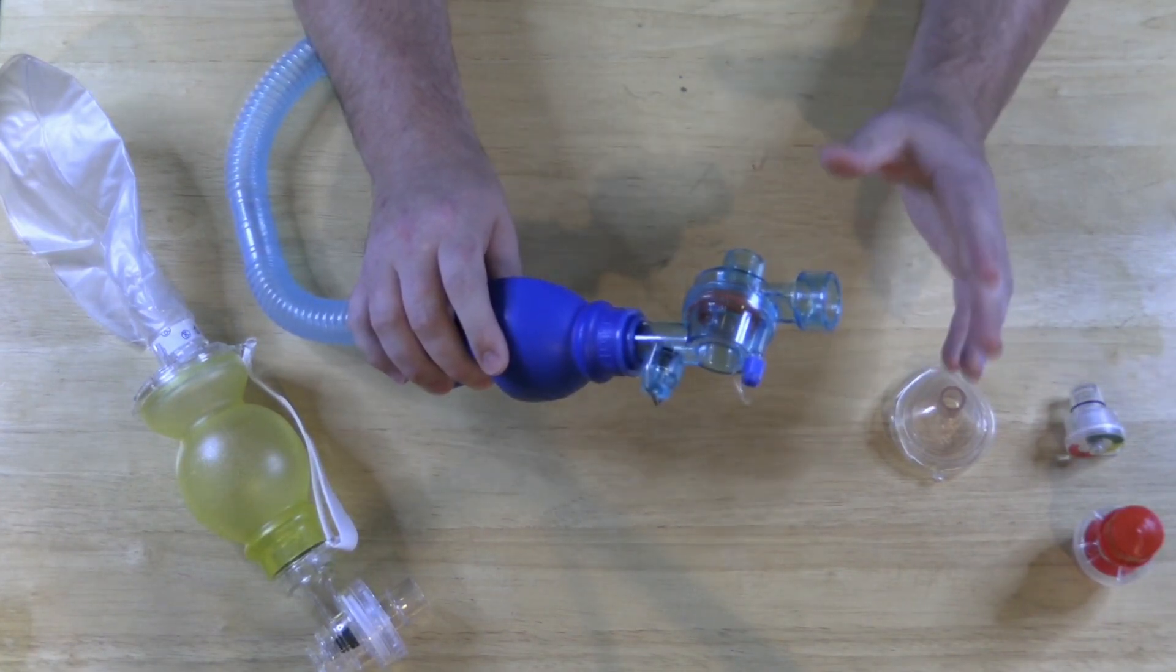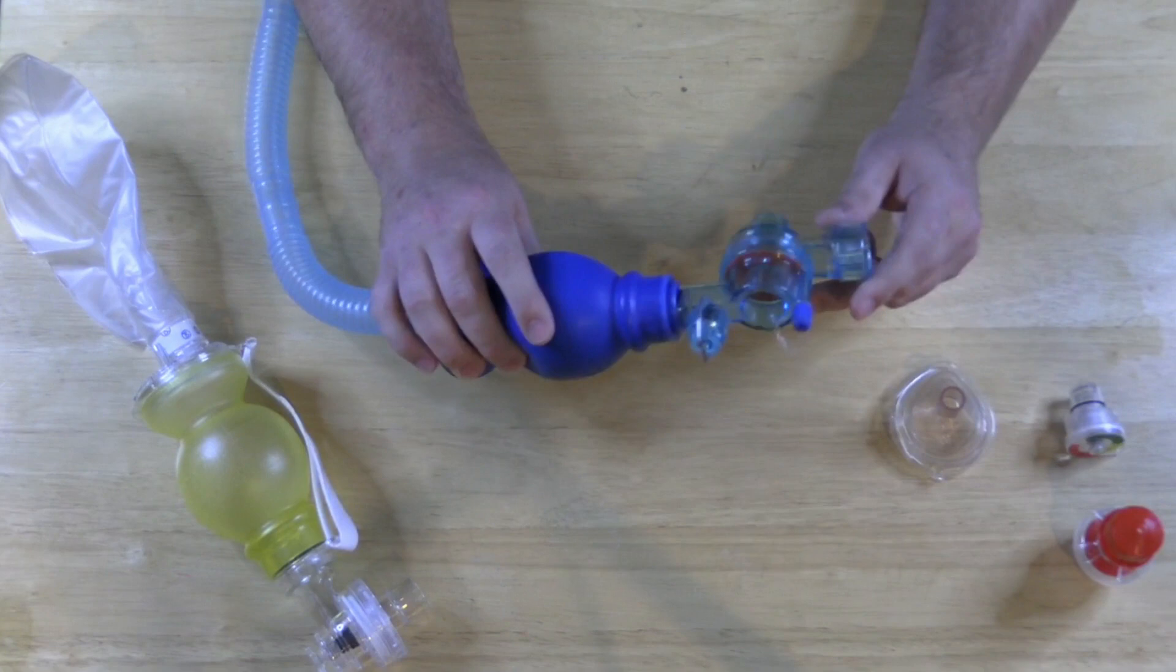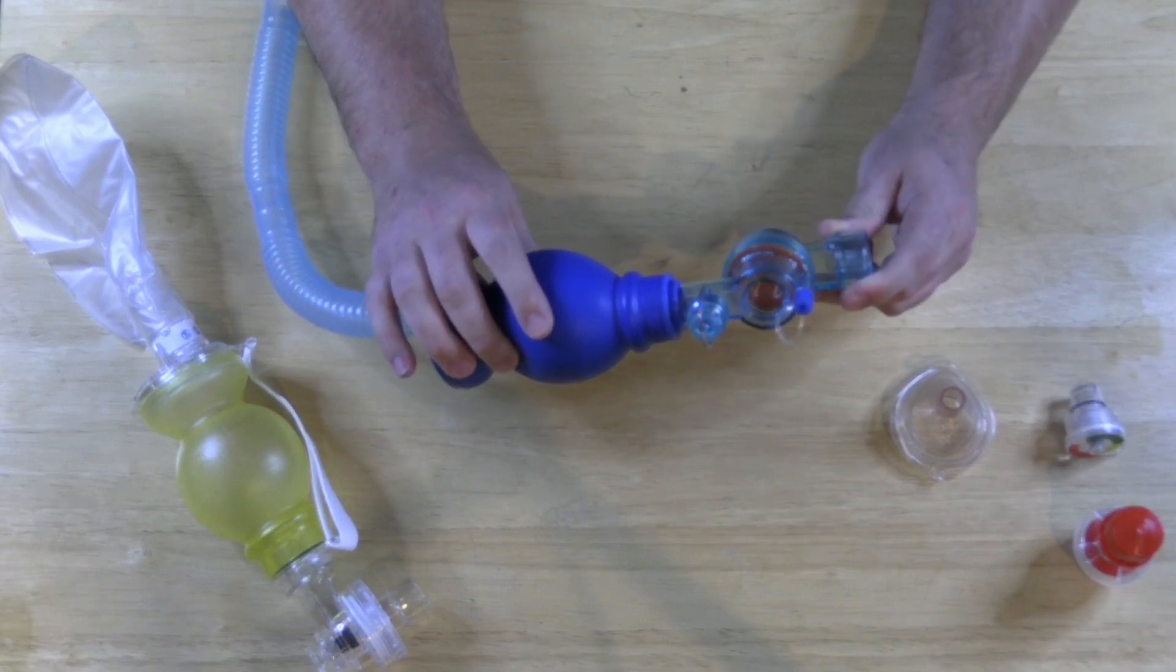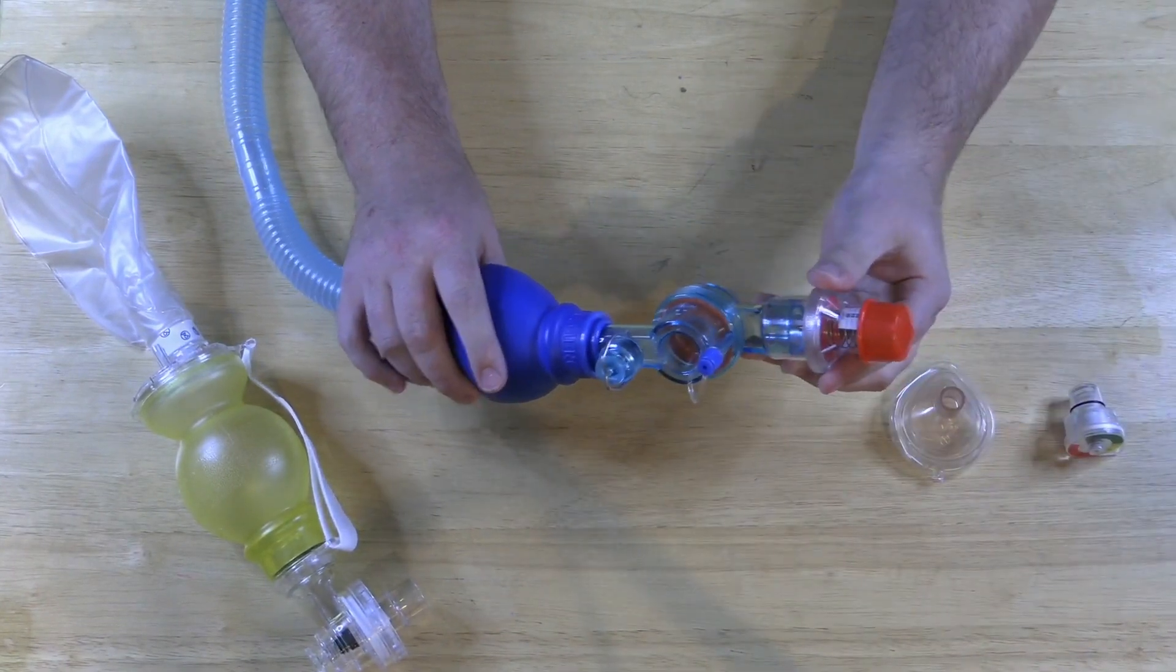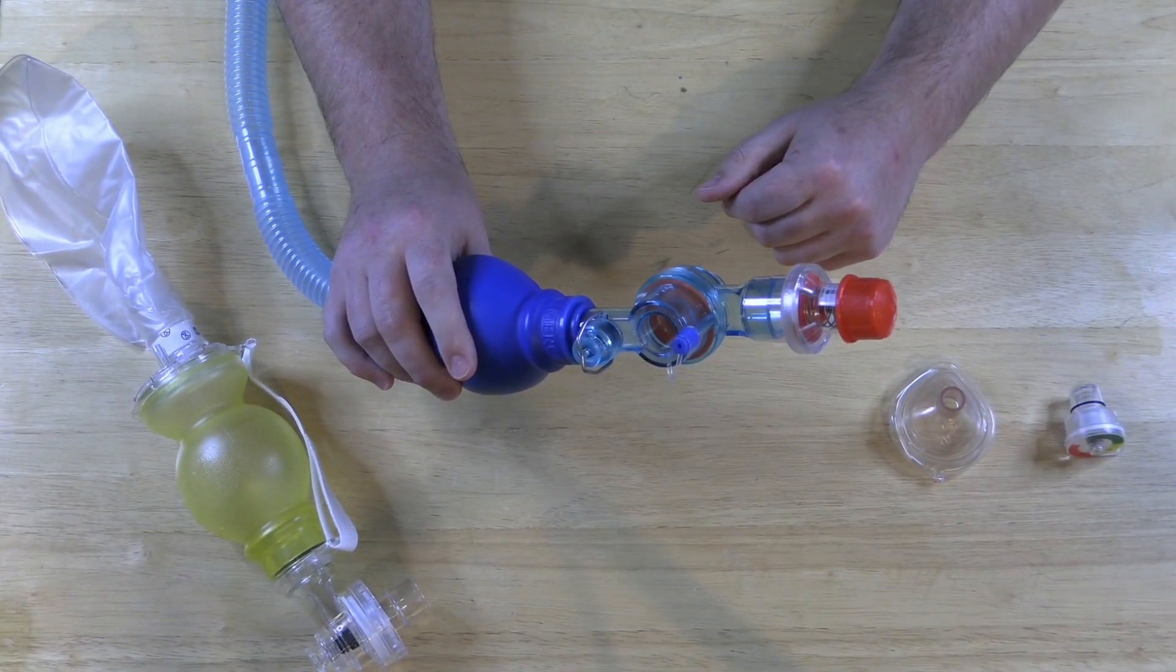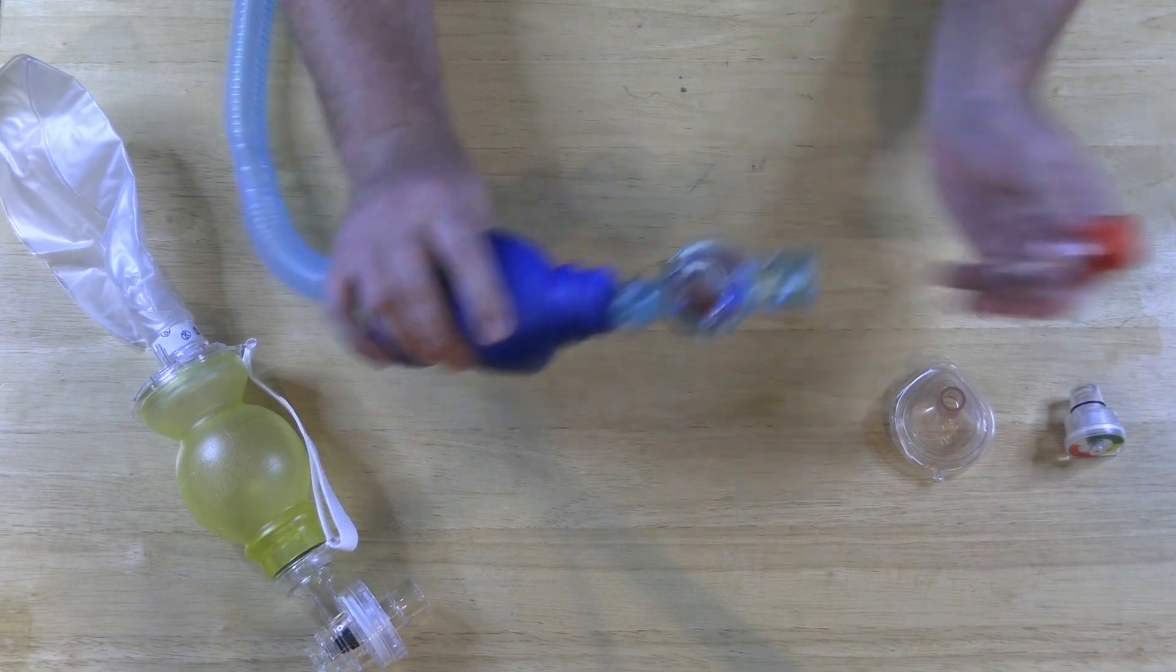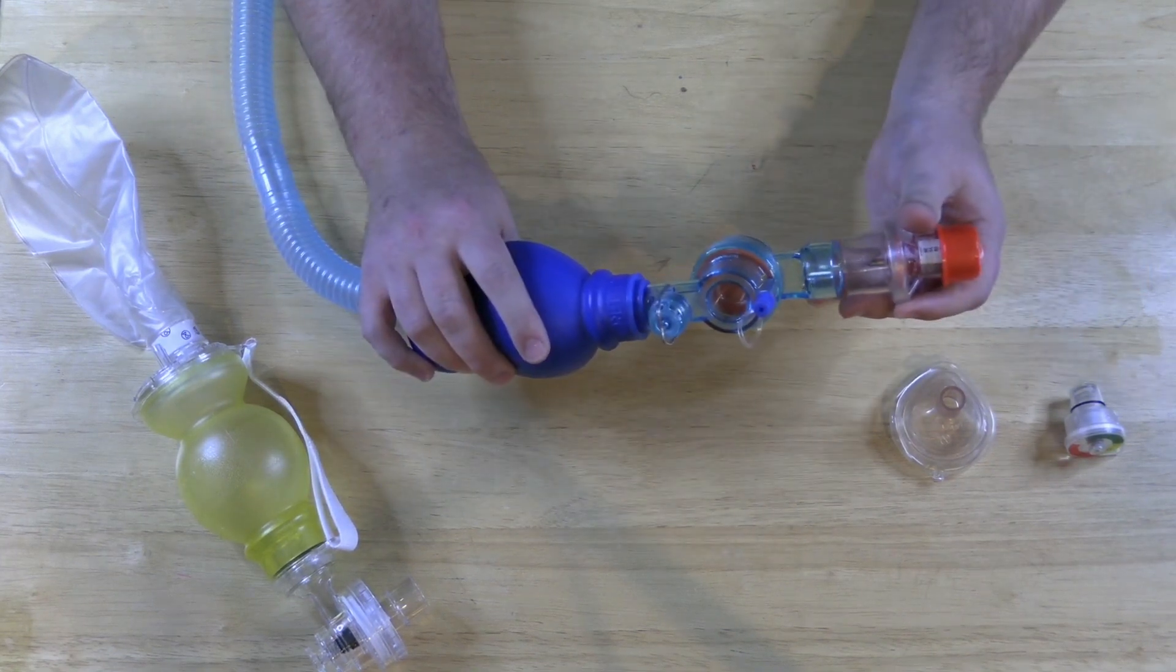So I don't have to put anything else on except the peep valve. The ones from Boundtree already come with the peep valve on like this. So you'd have to actually take it off if you didn't want peep and that's an important point.